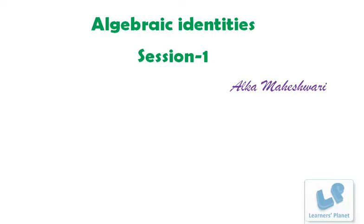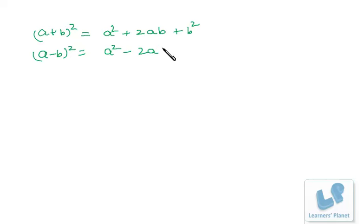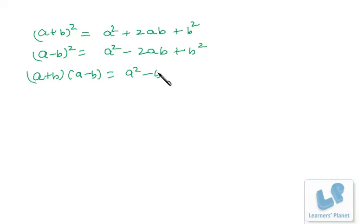Let me do a quick recap of some of the results. First, (a+b)² = a² + 2ab + b². Similarly, (a-b)² = a² - 2ab + b². Then (a+b)(a-b) = a² - b². Similarly, (a+b+c)² = a² + b² + c² + 2ab + 2bc + 2ac.